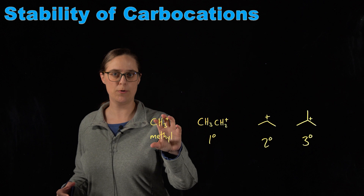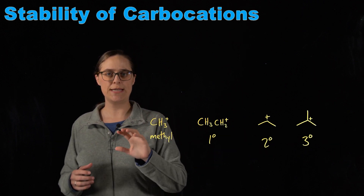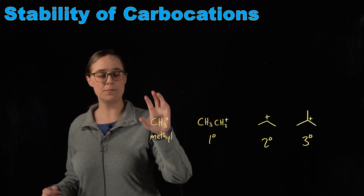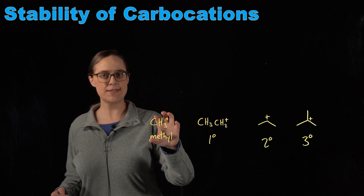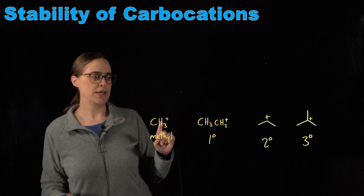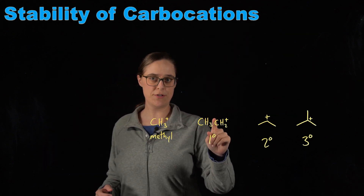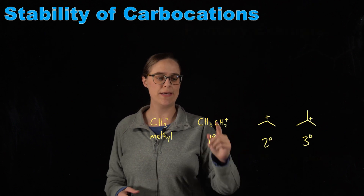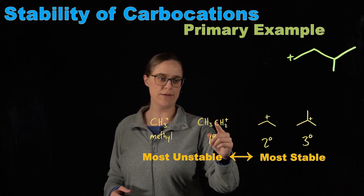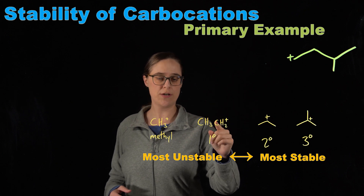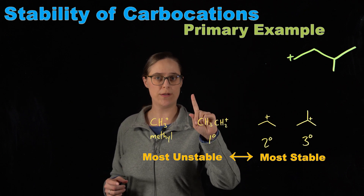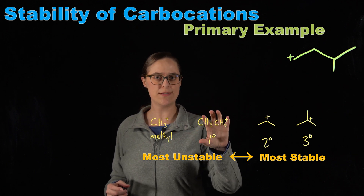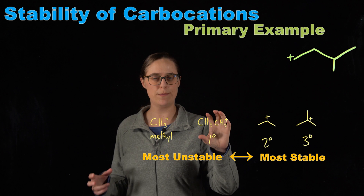A methyl carbocation is one where the carbon with the positive charge is not bonded directly to any other carbons. This is the most unstable — this is not going to form. However, a primary carbocation is one in which the carbon with the positive charge is bonded directly to one other carbon. It's more stable than methyl, but still not stable enough to actually form in most cases.